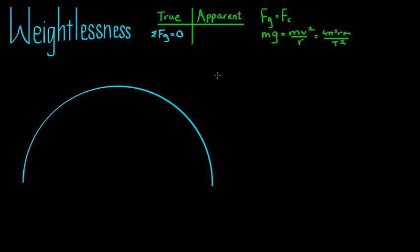But apparent weightlessness is a bit different. With apparent weightlessness, it's when the normal force acting on you equals zero. So even though you still have a gravity force, there's no force pushing off the ground onto your feet. The normal force equals zero.